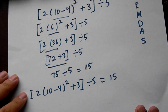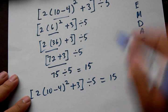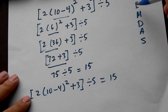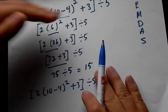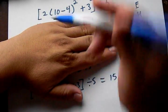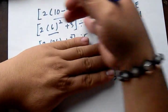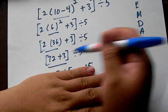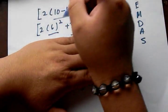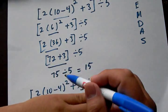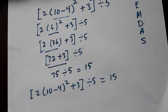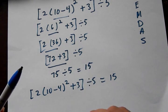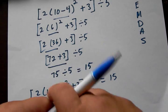That's pretty much it. The only thing you have to worry about is going in order with parentheses, exponents, multiplication, division, addition, and subtraction. One thing that a lot of people don't remember is that you have to treat each individual step as a different expression. So you follow these rules on each one. Thank you for watching — subscribe or like if you like, and dislike if you dislike.